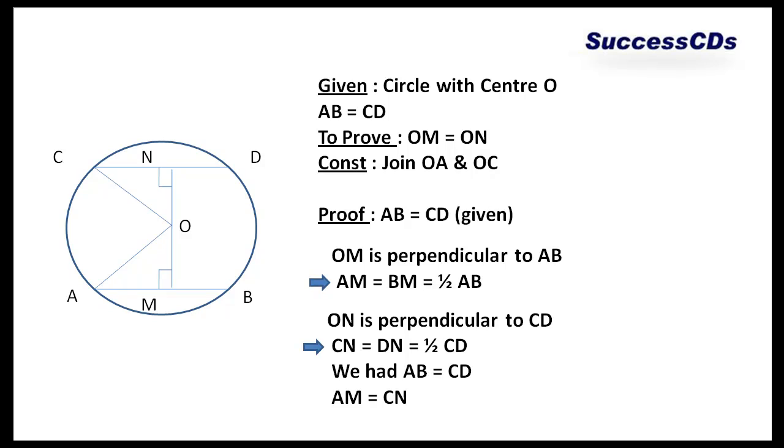Please remember this point. Distance between a point and a line is always the shortest distance which is the perpendicular distance. Now let's see the construction here. Join OA and OC. Now we come to the proof. AB is equal to CD, that is already given to us.